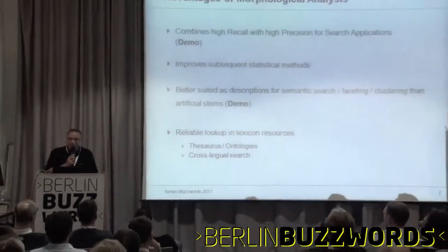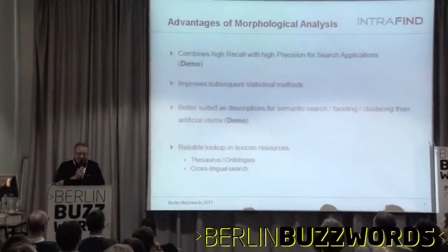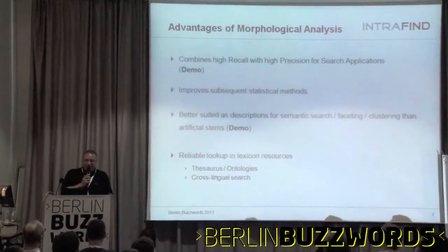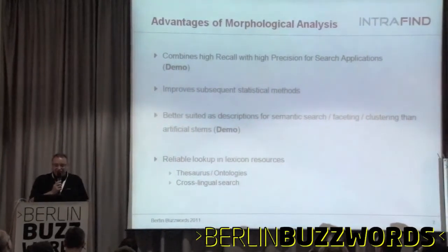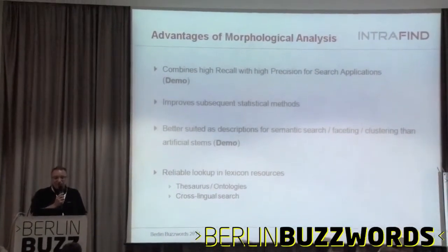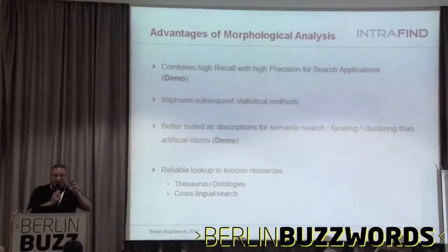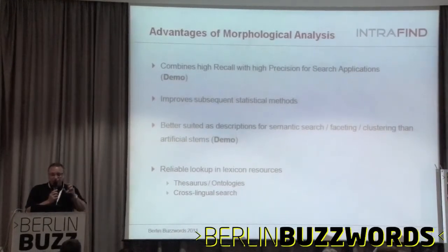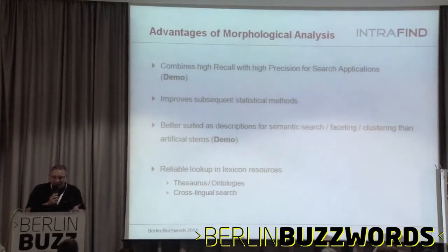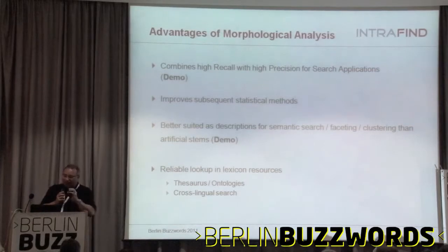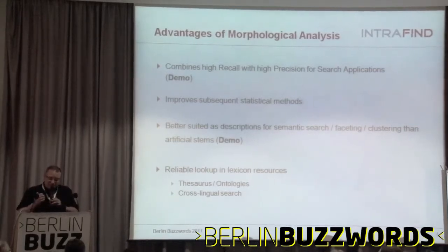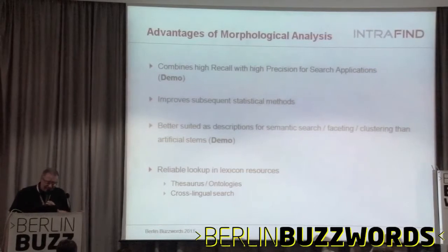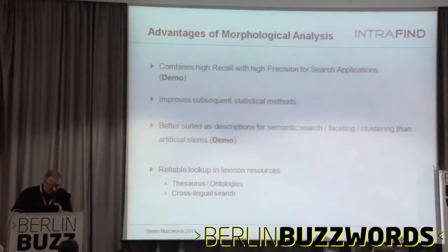Another use of morphology is that normalizing words improves all subsequent statistical methods like text classification or clustering, since they work on a much smaller word basis than if using inflected forms. For clustering or associative search, with base forms you can show base forms in results, and since you have category information you can decide which phrases are noun phrases. I can show some examples of this.